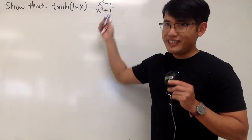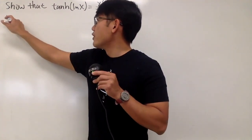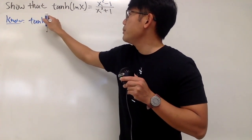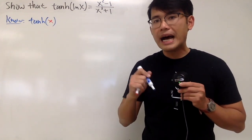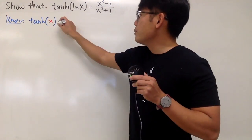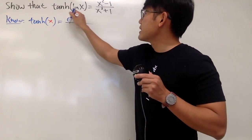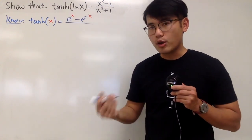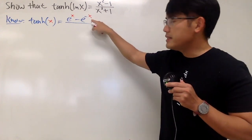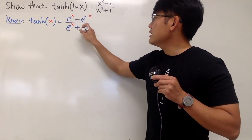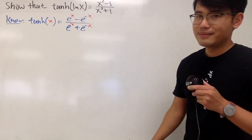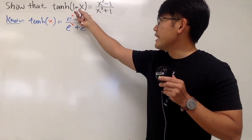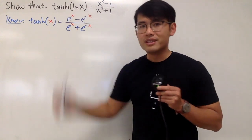tanh of natural log of x equals this. The hyperbolic tangent of x is sinh x over cosh x; since the over-2 factors cancel, it equals e to the x minus e to the negative x, over e to the x plus e to the negative x. For tanh of natural log of x, we just substitute natural log of x into each x in that formula.